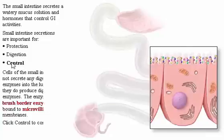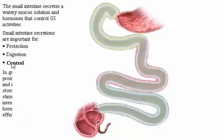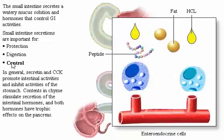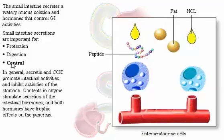In general, secretin and CCK promote intestinal activities and inhibit activities of the stomach. Contents in chyme stimulate secretion of the intestinal hormones, and both hormones have trophic effects on the pancreas.